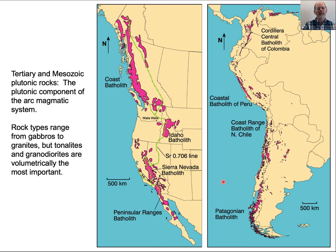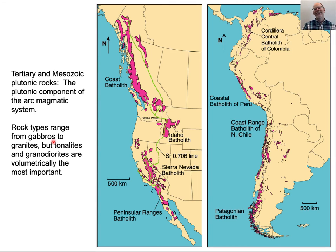There are the plutonic rocks of the Coast Batholith, the Idaho Batholith, the Sierra Nevadas, and the whole Andean Batholith. These include a large range of rock types — granites, everything from gabbro to granite. However, it turns out that tonalites and granodiorites are volumetrically the most important. When we talk about the Sierra Nevada granites, most of the Sierras is actually tonalite and granodiorite — meaning it has a lot less potassium than granite would.